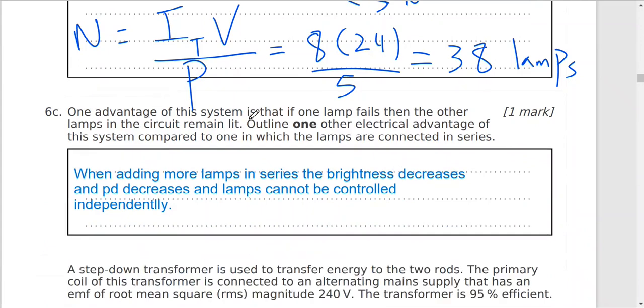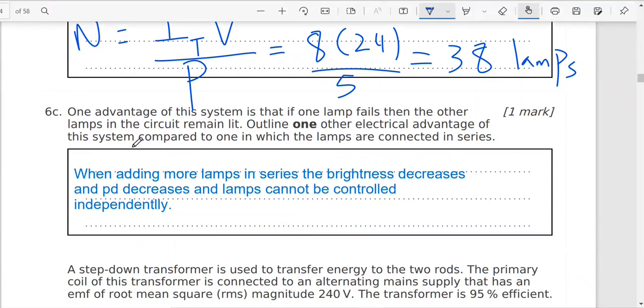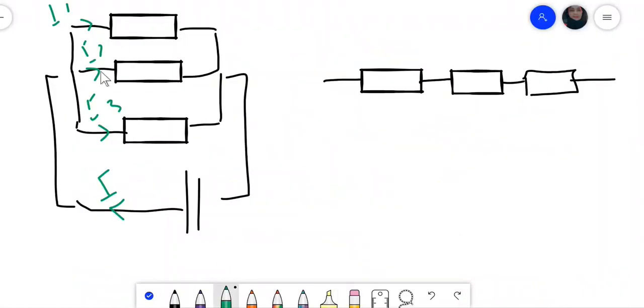Okay, one advantage of this system is that if one lamp fails then the other lamps in the circuit remain lit. Outline one other electrical advantage of this system. Now the lamps they're connected in parallel. We know connection in parallel all of them they will have the same voltage. So if the voltage of the battery is 24 volt all of them they will have the same voltage. So V1 will equal V2 will equal V3, will equal 24 volt. That means they will have the same brightness because there's the same voltage.